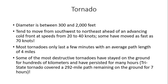Most tornadoes last only a few minutes with an average path length of about four miles. However, some of the most destructive tornadoes have stayed on the ground for hundreds of kilometers and persisted for many hours. A great example is the Tri-State Tornado of 1925, which covered a 292-mile path and remained on the ground for seven hours, impacting the states of Missouri, Illinois, and Indiana.